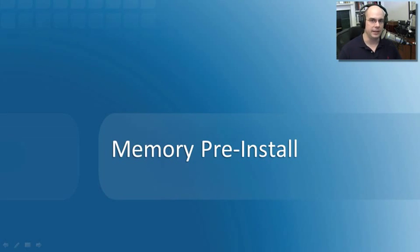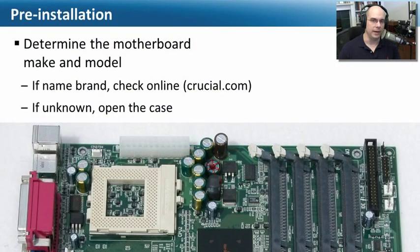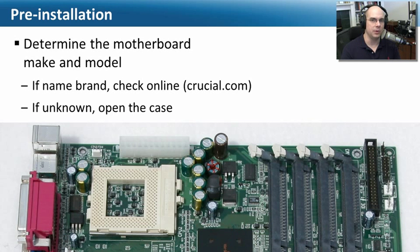We're going to focus on memory in this particular video. The first thing we need to think about before we actually begin the installation is understanding the exact type of memory we need. Your motherboard and the type of memory on it are very closely linked. You don't want to simply find a random memory module that happens to fit into the slot and hope it's going to work — 99 times out of 100, it absolutely is not. Check your motherboard documentation, grab the manual, look on the motherboard website, and make sure you know exactly the specifications required so you can buy exactly the right type of memory.